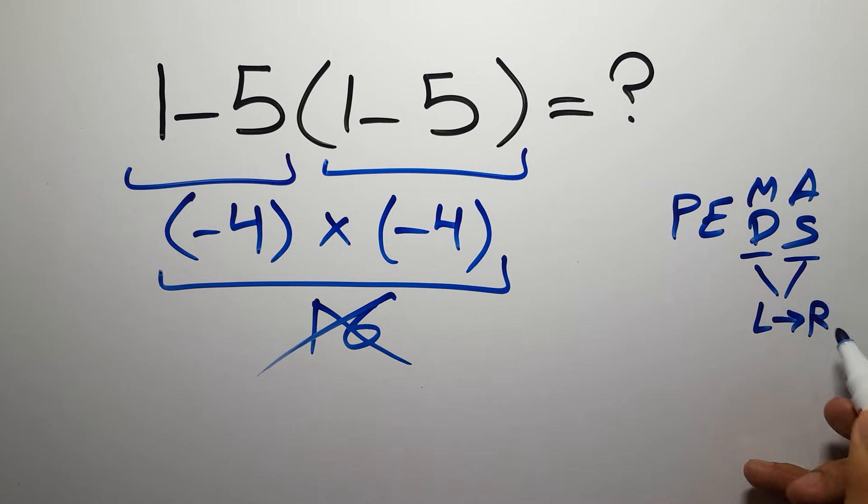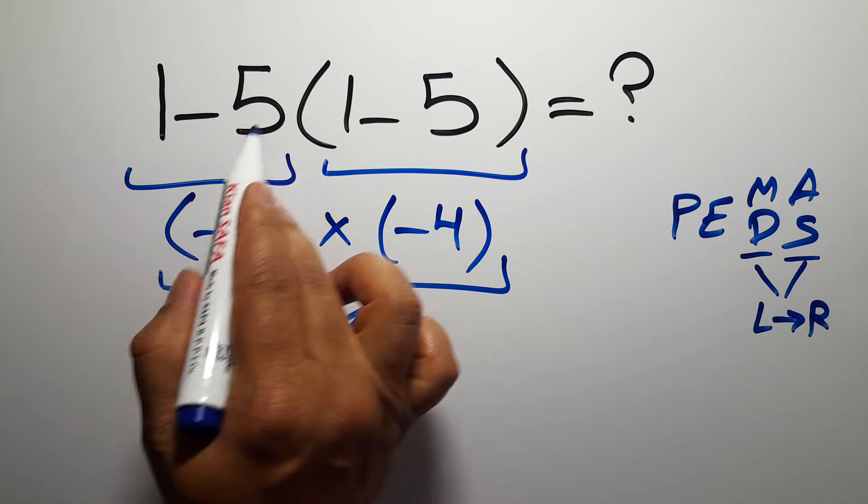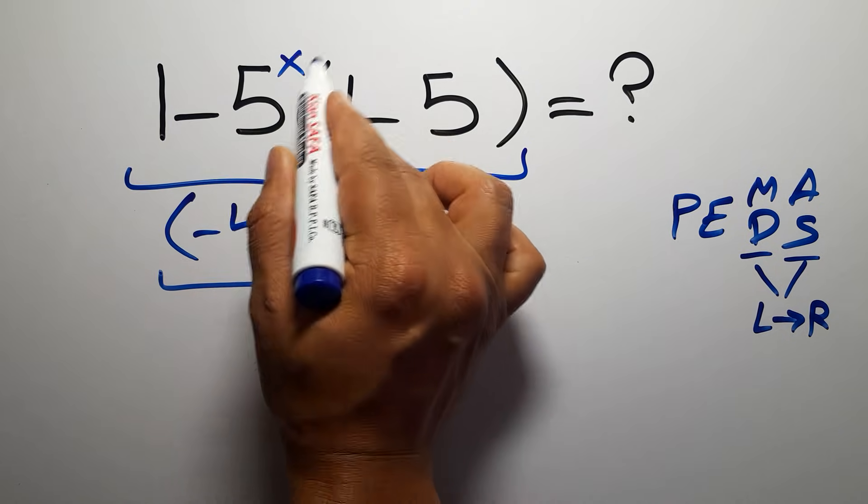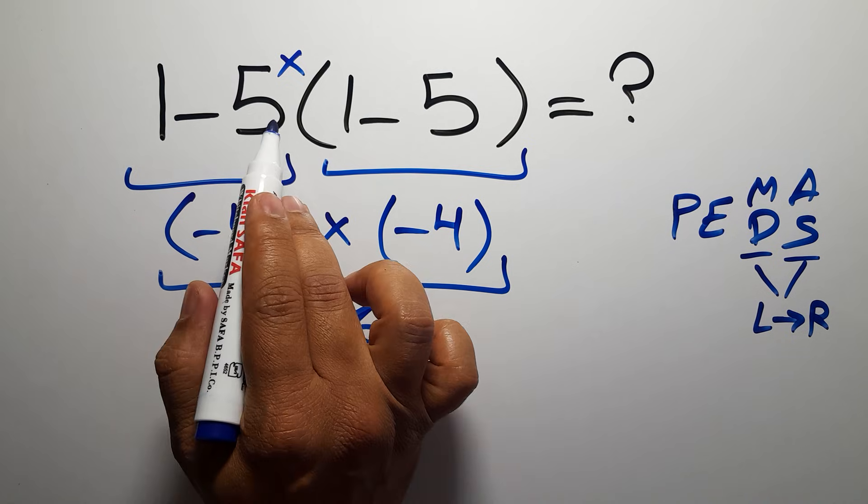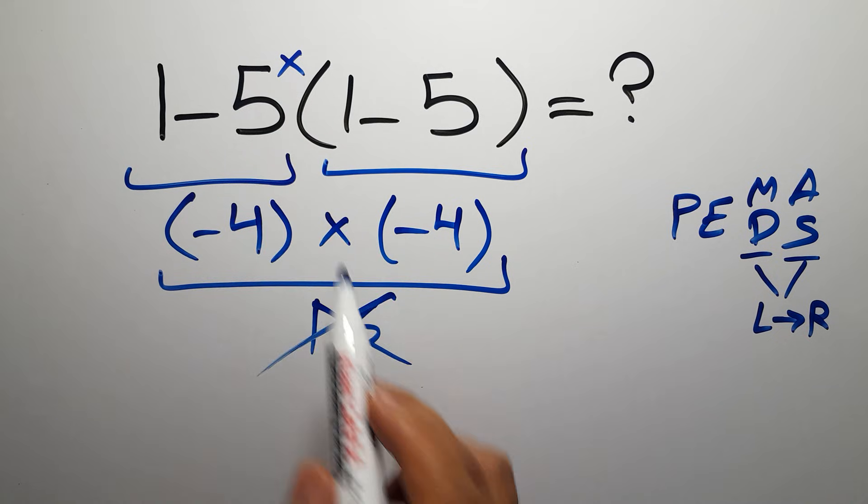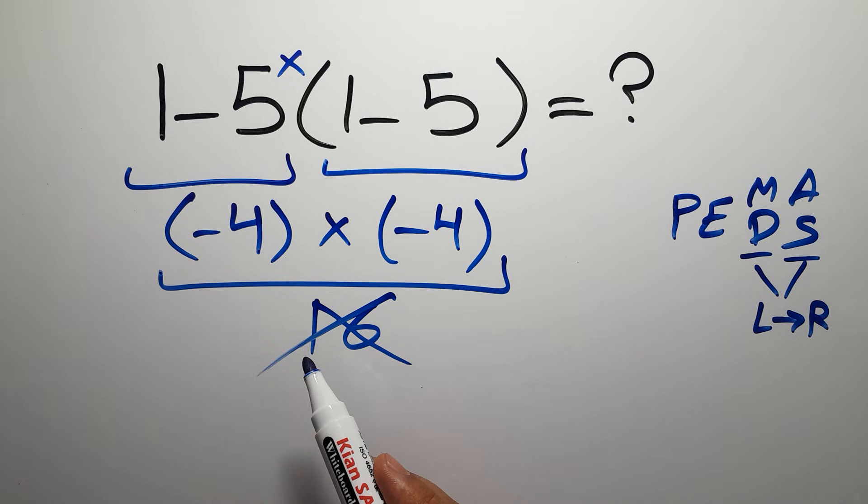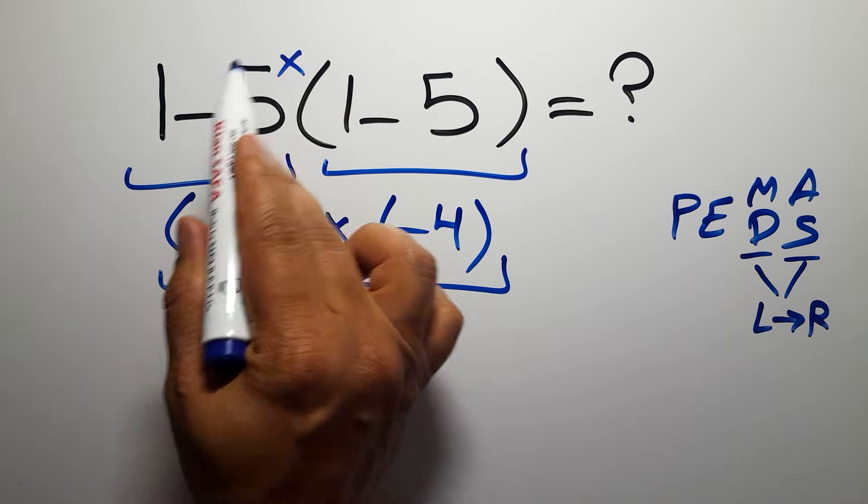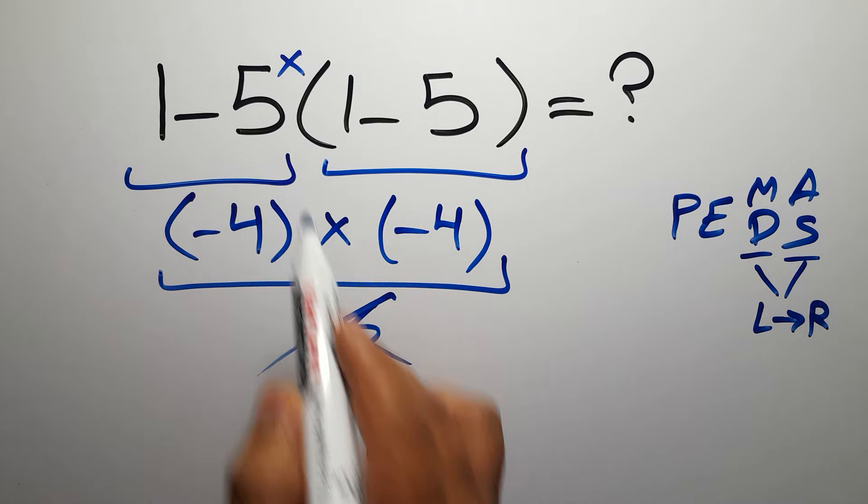Here in this expression we have one subtraction, one multiplication, and parentheses. We need to note that in mathematics when a number is placed next to parentheses it means multiplication, and we usually don't write the multiplication sign for brevity. So here we have a multiplication.